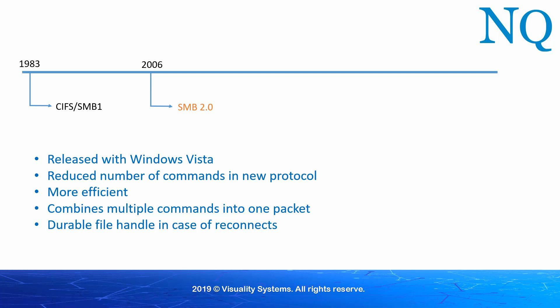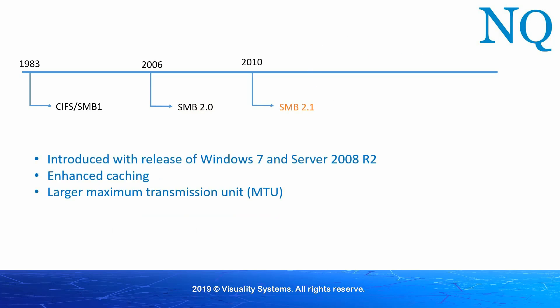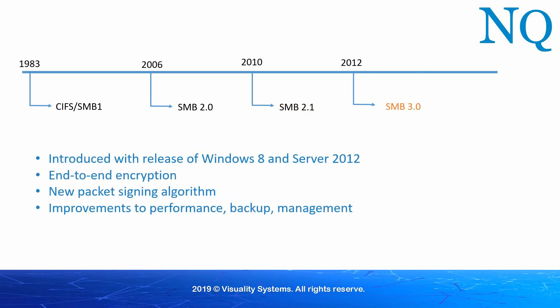Further, with the introduction of Windows 7 and Server 2008 R2 in 2010, a slightly enhanced version of SMB was released, known as version 2.1. It too included performance enhancements. The next major release of SMB, version 3.0.0, was released in 2012 with the announcement of Windows 8 and Server 2012. It offered end-to-end encryption of all SMB data packets, as well as a new packet signing algorithm for added security. Additional minor enhancements were made with the subsequent release of SMB version 3.0.2.